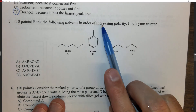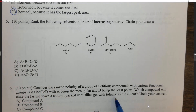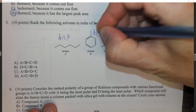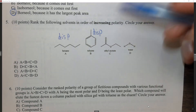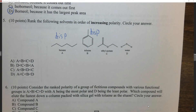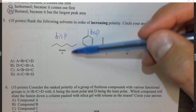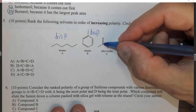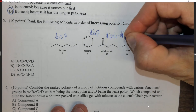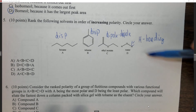Rank the following solvents in order of increasing polarity. We have hexane and toluene — both only have dispersion forces. It's important to remember that aromatic rings are slightly more polar than alkyl chains. Then we look at a molecule with polar bonds — a C=O — so it has dipole-dipole forces and is polar. Finally water has hydrogen bonding, giving it the strongest intermolecular forces and therefore the strongest polarity.